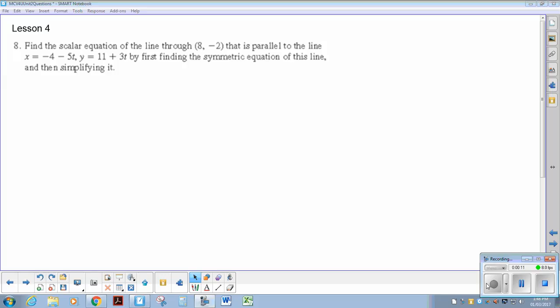parallel to the parametric line that's listed by first finding the symmetric equation of this line. So here's the thing with this question, it's really a B part and an A part because they really are unrelated.